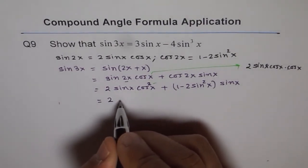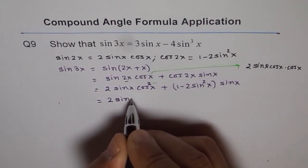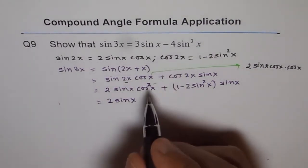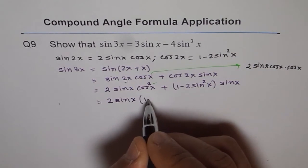And let me rewrite this. 2 sine x. And I don't need cos squares because I need everything in sine. So I'll convert this to 1 minus sine square x.